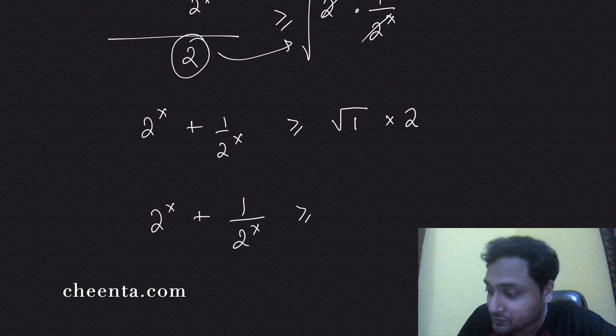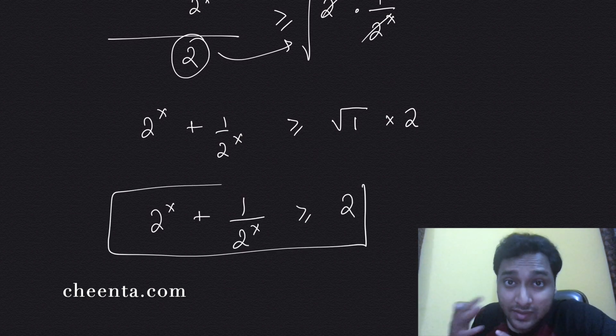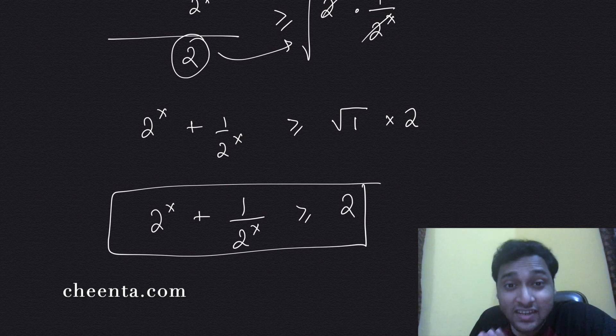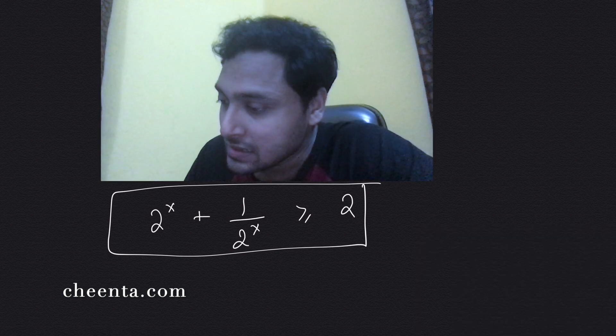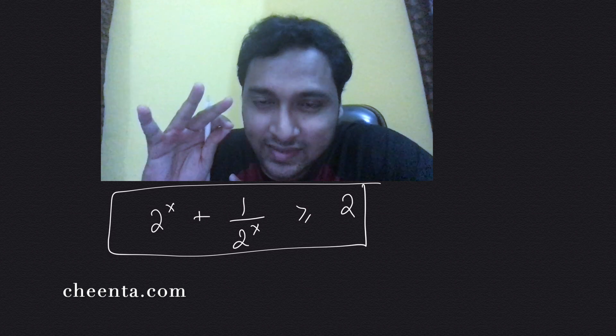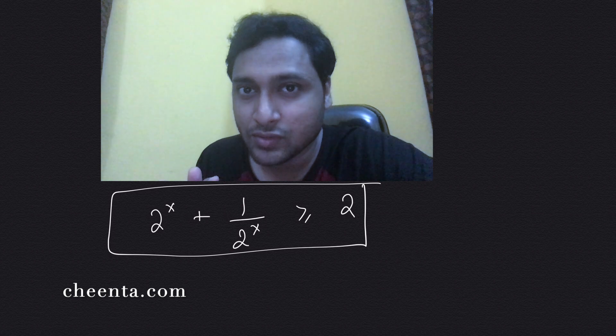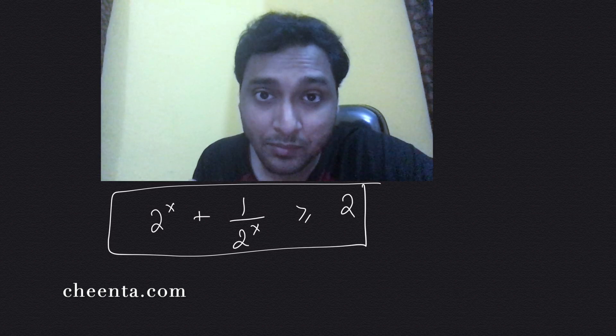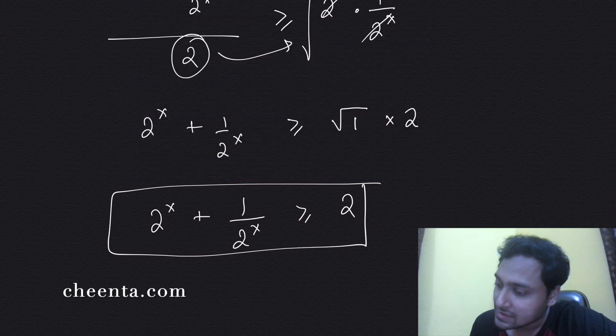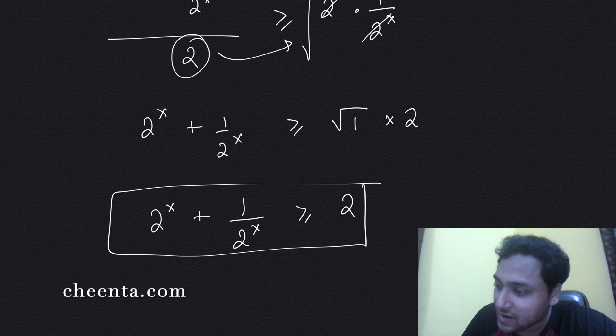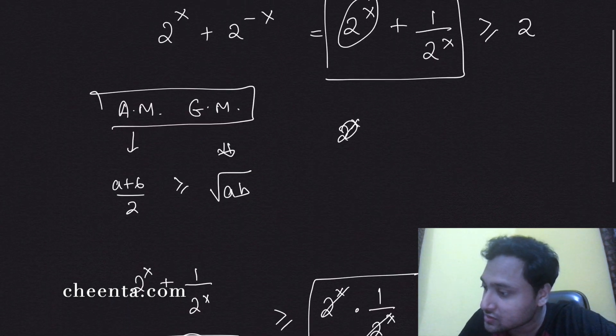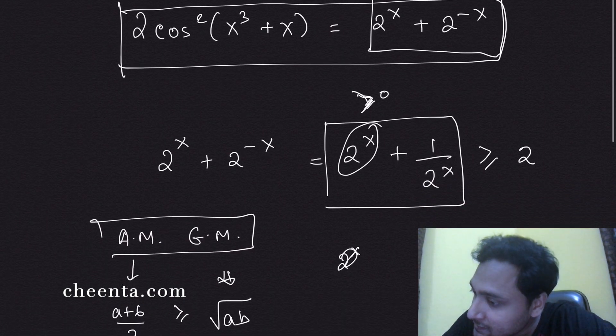That's exactly what I say: 2^x + 1/(2^x) is greater than or equals to 2. In fact, you can remember this as a strategy in problem solving: a number plus its reciprocal is always greater than or equals to two if the number is positive.